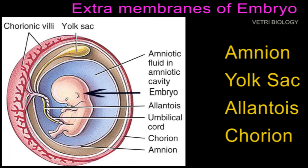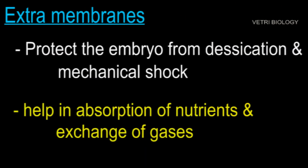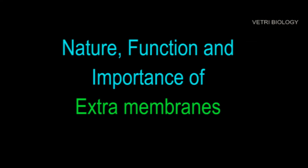Around the embryo there are some extra membranes: amnion, yolk sac, allantois, and chorion. These membranes protect the embryo from desiccation and mechanical shock, and they help in absorption of nutrients and exchange of gases. Let us learn about the nature, functions, and importance of these extra membranes.